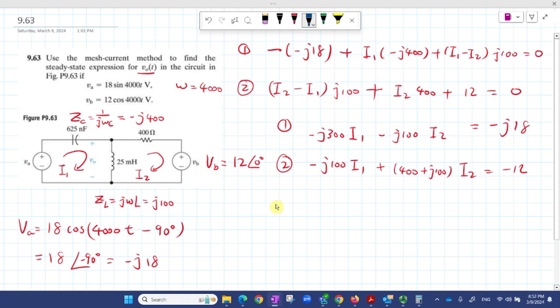So I find I1 equals 0.0675 - j0.0075, and I2 equals -0.0225 + j0.0225.